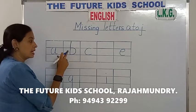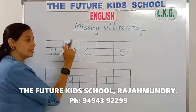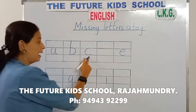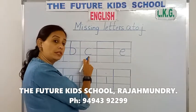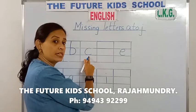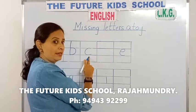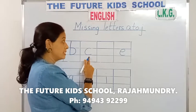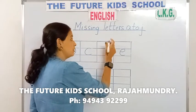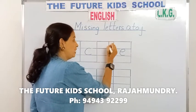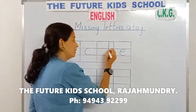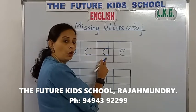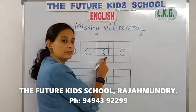Yes, after B, C. And after C children, what comes after C? D. Yes, the letter D. Very good. So we need to fill in the letter D over here. Small letter D.